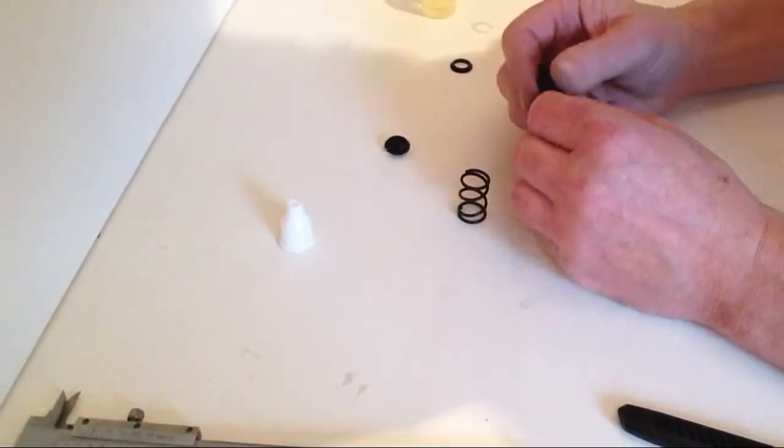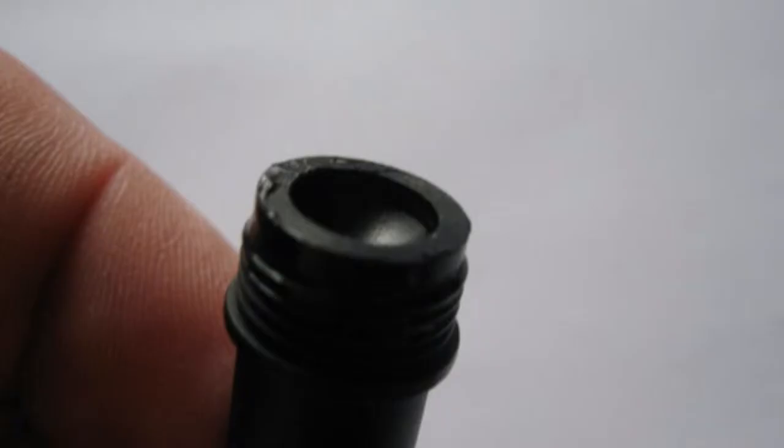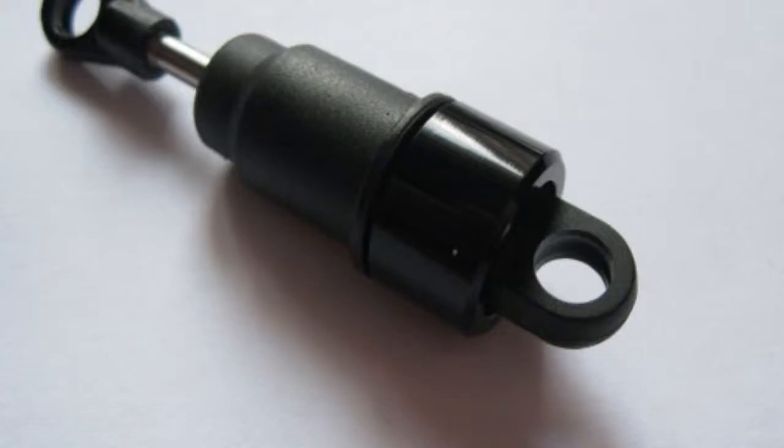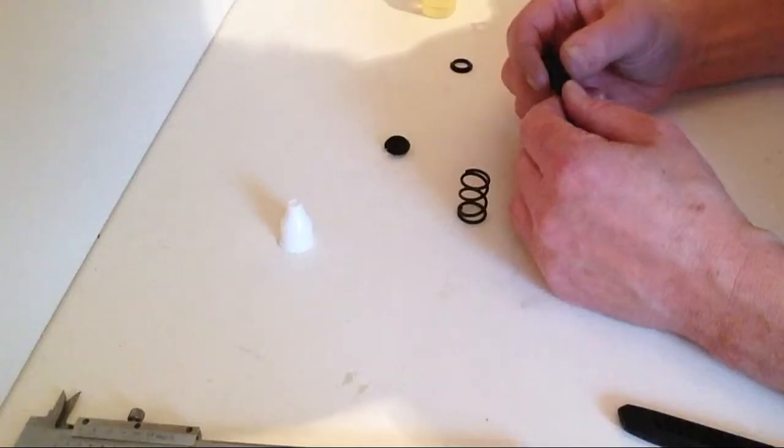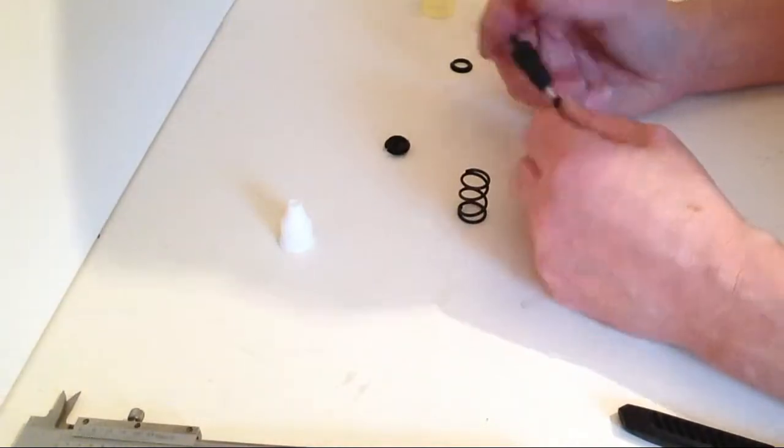Once you've done that, place the top on with the seal and then just work that backwards and forwards making sure that it is OK, and then we will put the rest of the assembly on.